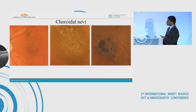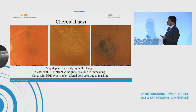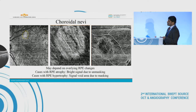Coming to choroidal nevi — the two images on the left show no overlying RPE hypertrophy, but in the third case there is definite RPE hypertrophy over the nevus. On OCTA, the signal is bright corresponding to the nevi in the first two, but in the third the signal is dark with only scant vascularity seen within.